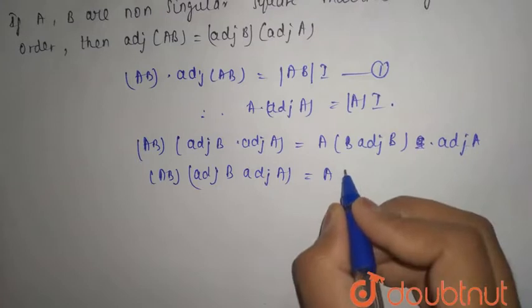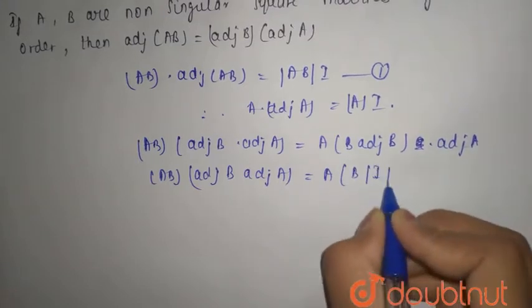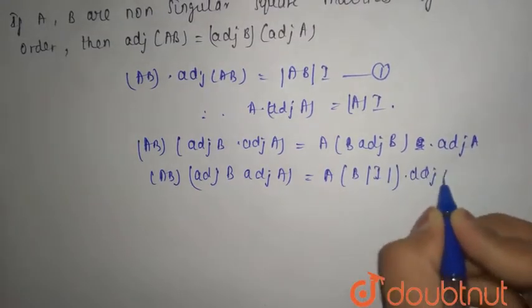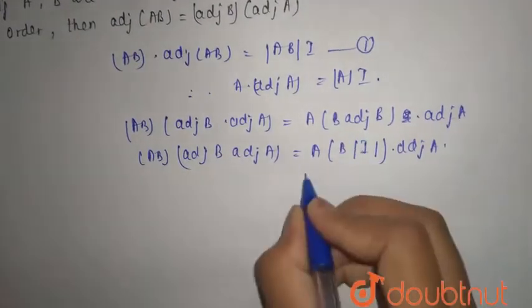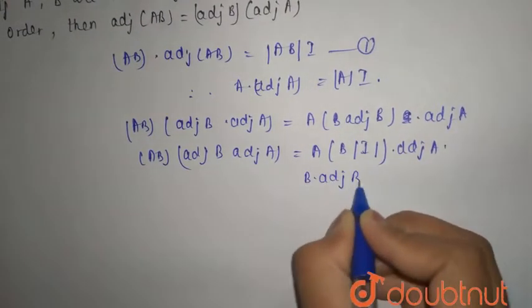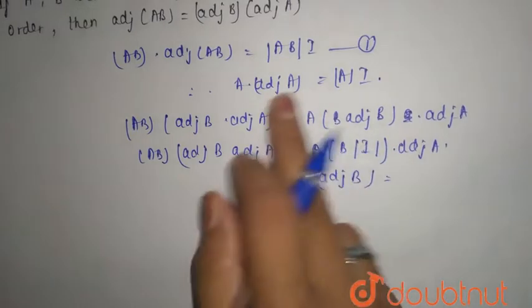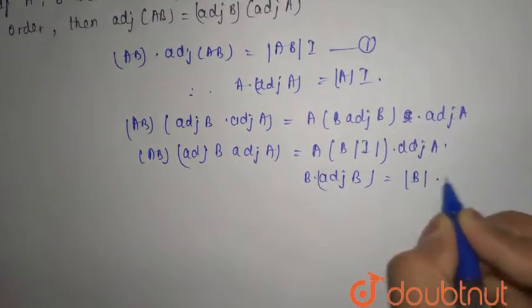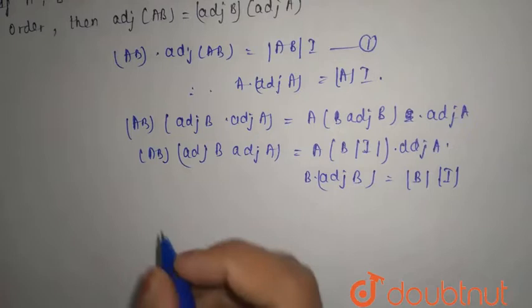This again can be written as B into identity matrix into adjoint of A, because B into adjoint of B can be written as B mod with the identity matrix, multiplied with identity matrix.